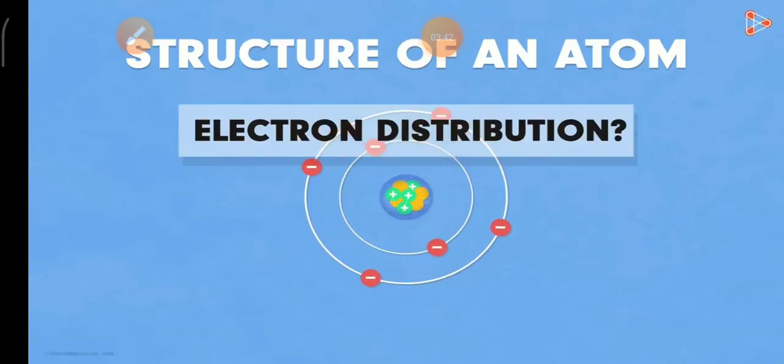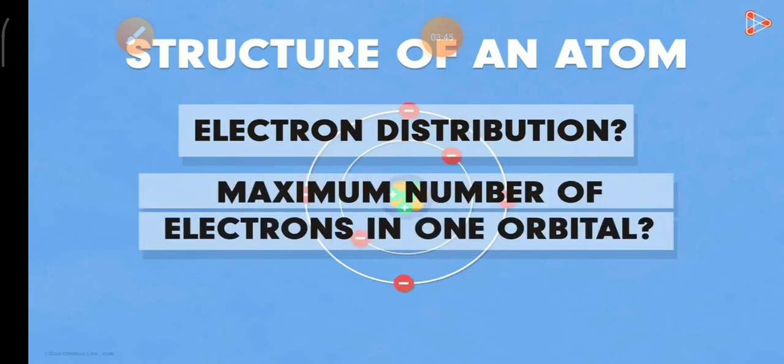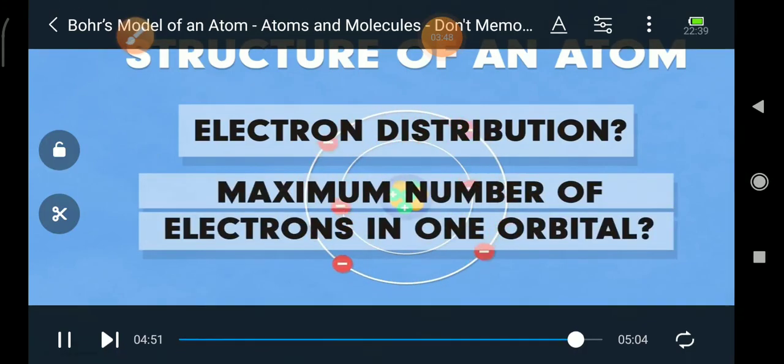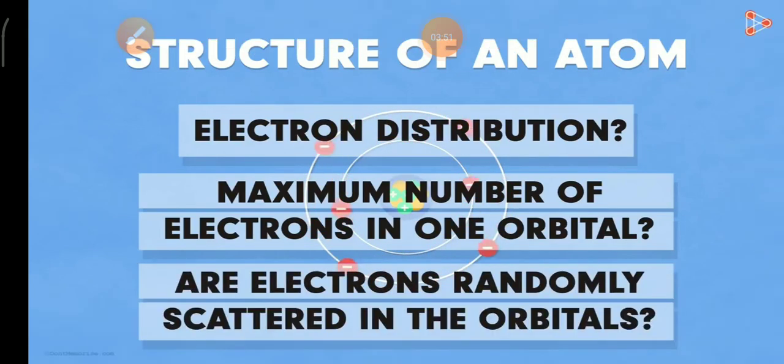And the second one is electron distribution. So how the electrons are distributed, maximum number of electrons in the orbital, one orbital maximum electrons present, and also are electrons randomly scattered in the orbitals. So we will talk about Niels Bohr's model. An electron in a shell can move higher energy level by absorbing energy, releasing a fixed amount of energy. So much more important, Niels Bohr's concept is energy levels. So energy level is nothing but electron rotating pathway. This is how the electrons are distributed, and also Bohr's limitations we will talk about.